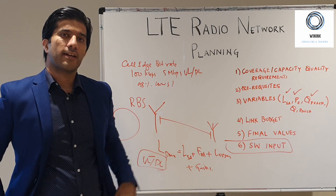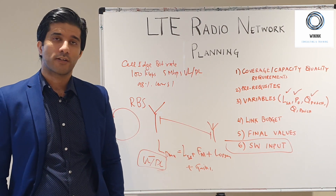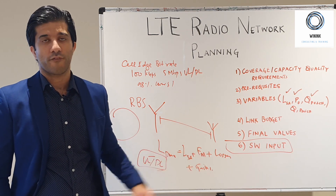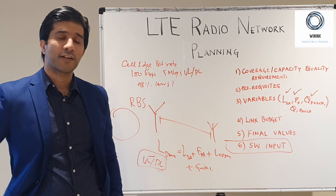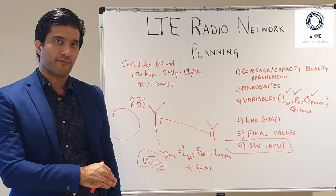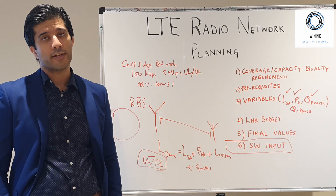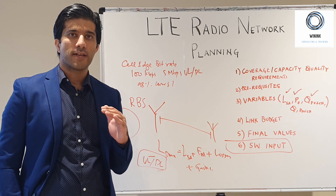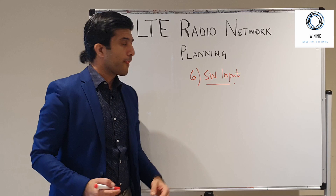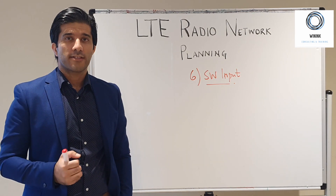Next is your software inputs. The values obtained from previous steps go into your planning software. For example, a particular coverage probability combined with your power control target and cell load gives the noise rise margin, which is included in the software values. You also have clutter shadow fading margins, fast fading margins, and log-normal fading margins, all of which go into software like Atoll or Planet. The software inputs also include reference signal power — your PDCCH, PSCH, and other channels all have reference powers relative to the reference signal.